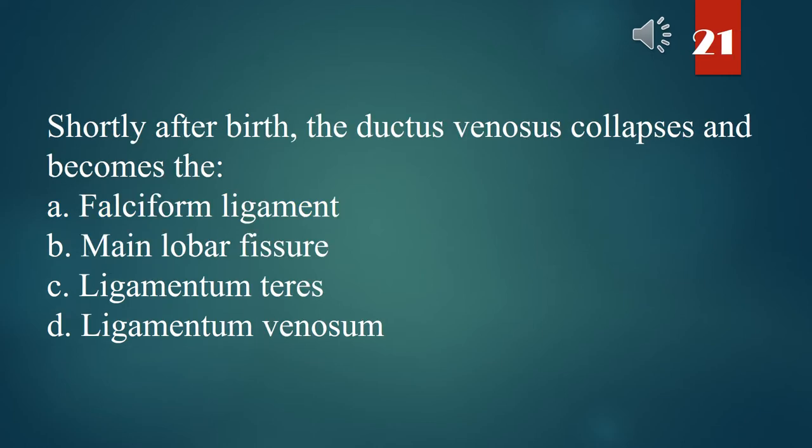Shortly after birth, the ductus venosus collapses and becomes the: A. Falciform ligament. B. Main lobar fissure. C. Ligamentum teres. D. Ligamentum venosum. The answer is D. Ligamentum venosum.